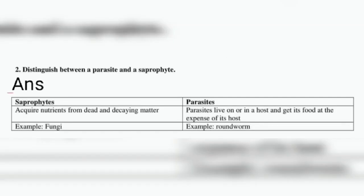Question two: distinguish between a parasite and a saprotroph. Saprotrophs acquire nutrients from dead and decaying matter — for example, fungi. Parasites live on or in a host and get food at the expense of the host — for example, roundworm, which lives inside the host and takes food from it.